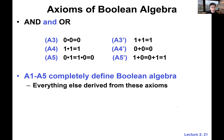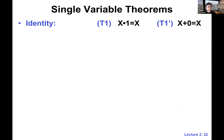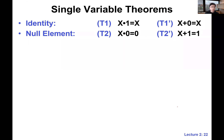We want to derive some useful theorems that are more convenient to use. The first group is single-variable theorems. The first is called identity: x AND 1 is x, so one is the identity element for AND regardless of the value of x. Similarly for OR: x OR 0 is x. We also have the null element: x AND 0 is zero, regardless of the value of x.